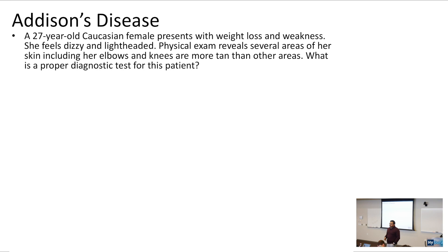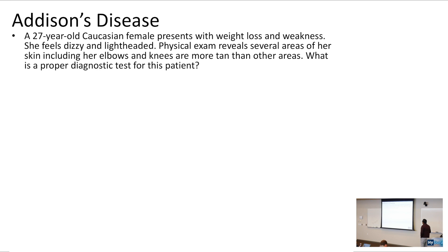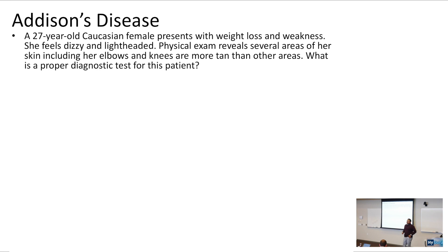What about Addison's disease? Addison's disease translates in your mind as primary adrenal insufficiency. A 27-year-old Caucasian female presents with weight loss, weakness, dizziness, and lightheadedness. Physical exam reveals several areas of her skin, including her elbows and knees, that are more tan than other areas — the tanning of the skin is a key buzzword.